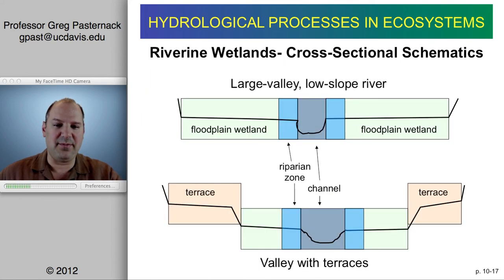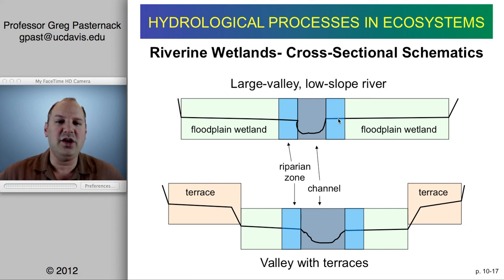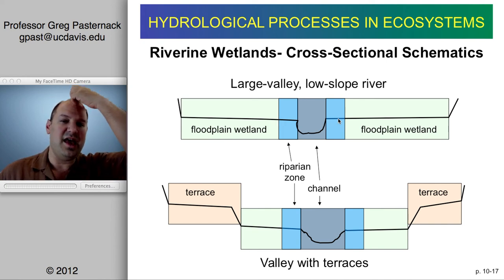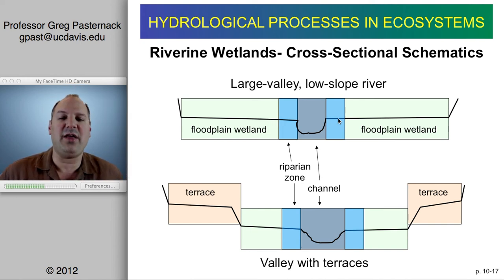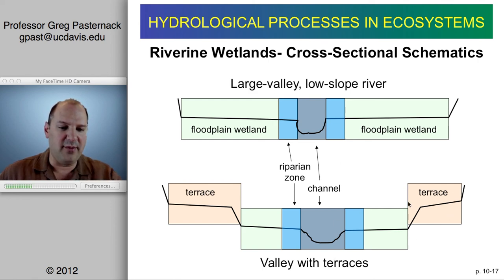Often we differentiate the area right along the river — which may be inundated more frequently and might have a different kind of vegetation — from the rest of the floodplain. In one schematic, you have a relatively small channel with a very flat, large floodplain. At the edge there may be a riparian fringe, but there's nothing fundamentally different about it — just the proximity of water allows for different vegetation.